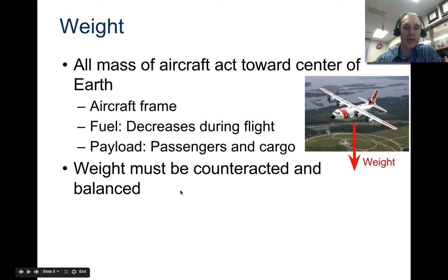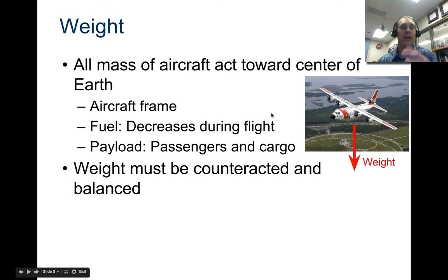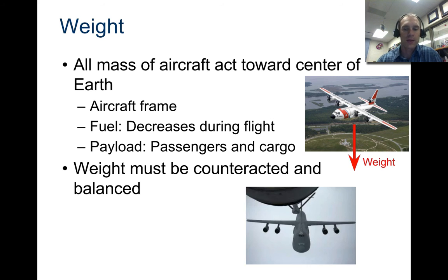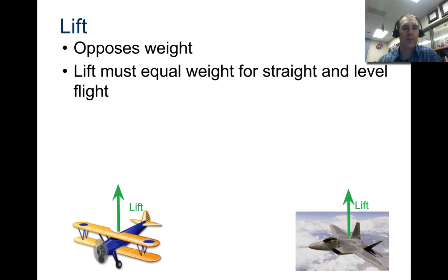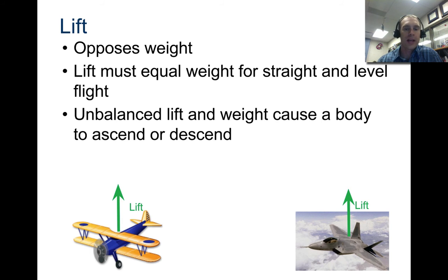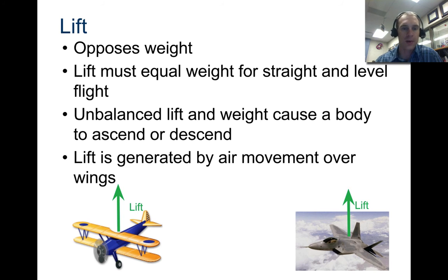It has to be counteracted and balanced. If you have too much weight in one place, your aircraft is not balanced, and it doesn't fit within that little flight envelope that we looked at earlier this year. So lift opposes weight, and it has to equal weight for straight and level flight. Unbalanced lift and weight cause the body to either ascend or descend.